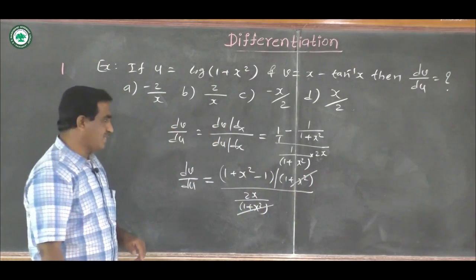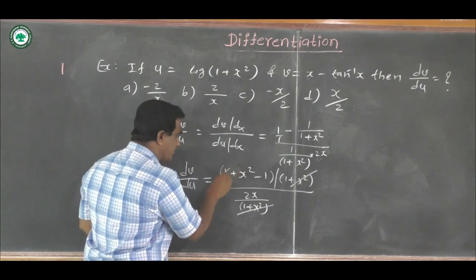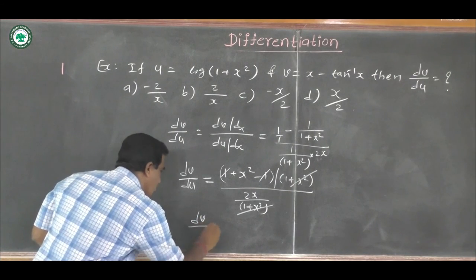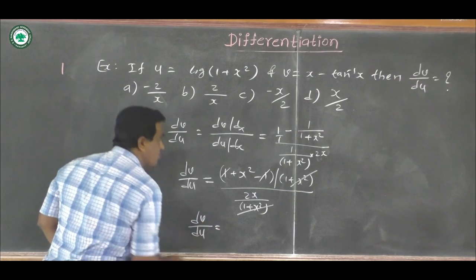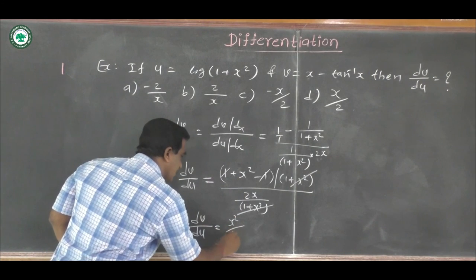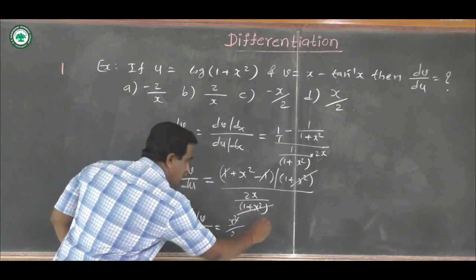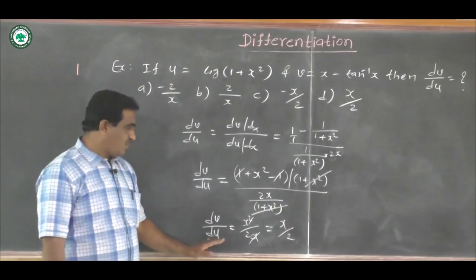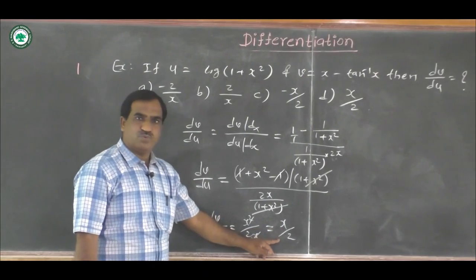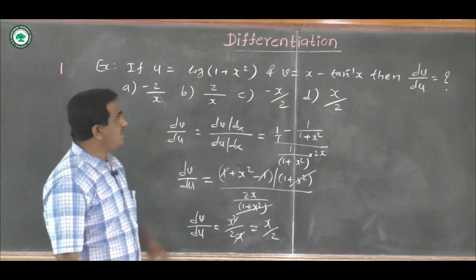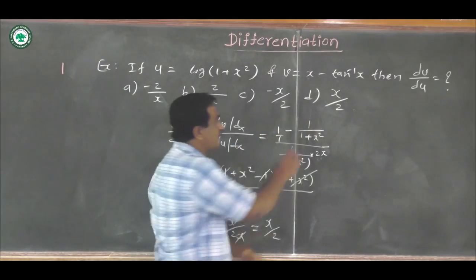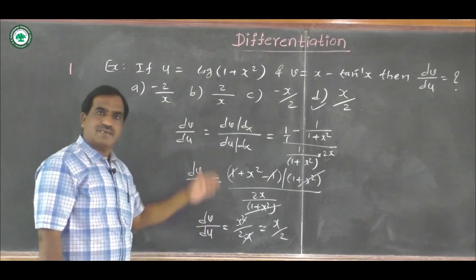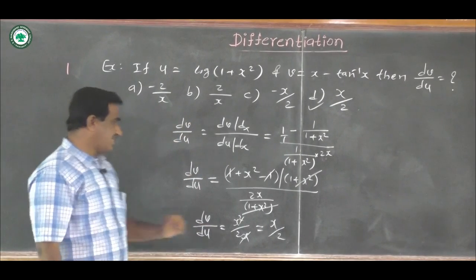Simplifying dv/du: the numerator 1 minus 1/(1 + x²) equals x²/(1 + x²). Dividing by 2x/(1 + x²), the (1 + x²) terms cancel, and we get x²/2x, which equals x/2. Therefore, dv/du equals x upon 2, and the correct answer is option d.